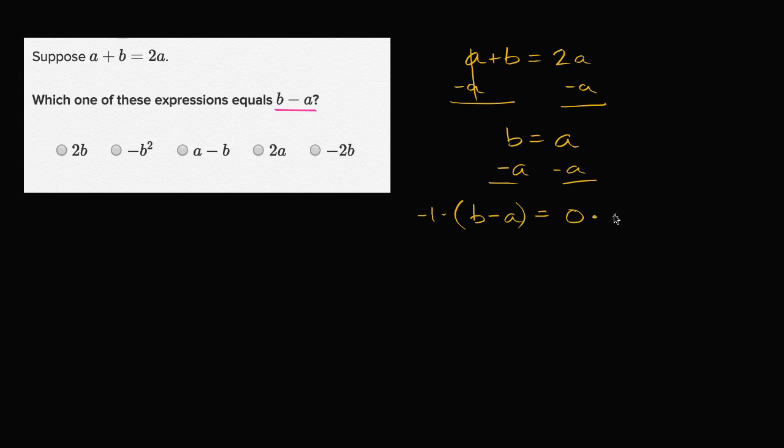So if we multiply both sides by negative one, what do we get? Well, on the left hand side we get a minus b, and on the right hand side we still get zero. If b minus a is zero,